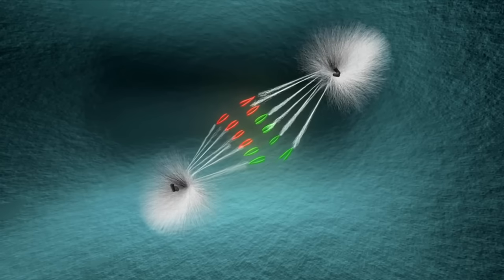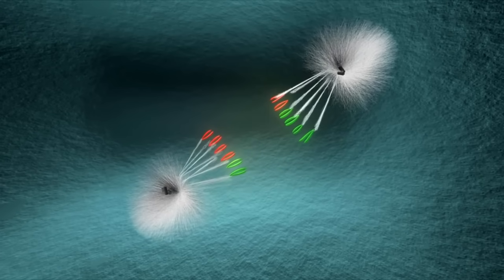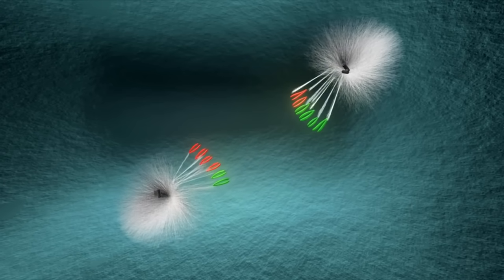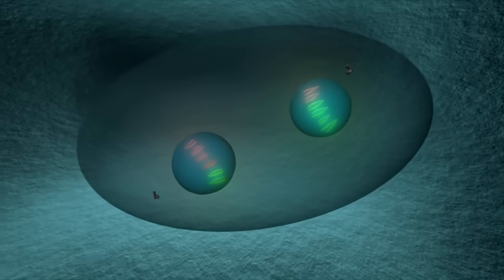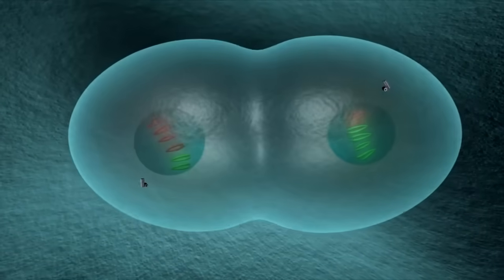Astronomers tried to model how such a large interstellar object could cross our path. Simulations suggest the odds are less than one in a million for a random ejection from another system to land one so close to Earth's orbit. The scale alone raises questions about what else might be lurking in the dark, undetected. This is not just another comet—it's a statistical outlier, a cosmic heavyweight that defies the usual odds.